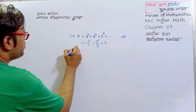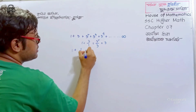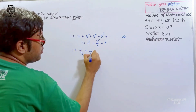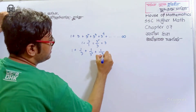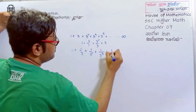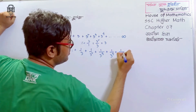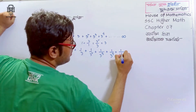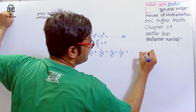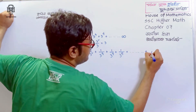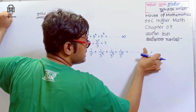Let's see: 1 plus 1 by 3, plus 1 by 3 squared, plus 1 by 3 cubed, plus 1 by 3 to the power 4, and so on to infinity.